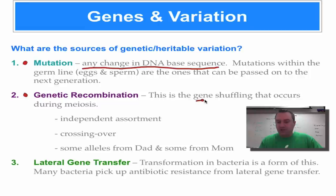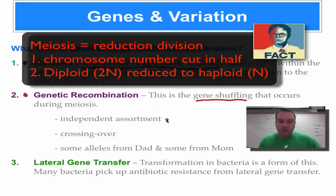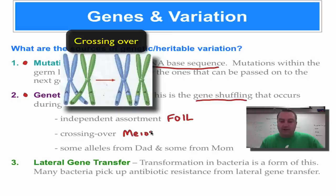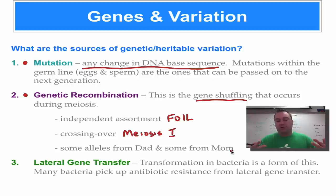Genetic recombination simply means gene shuffling — getting new combinations of genes. During sexual reproduction, meiosis creates independent assortment, meaning alleles segregate independently of each other. Crossing over occurs during meiosis I, specifically during prophase I, when parts of a chromosome switch places — think of it as cutting the deck in cards. And half of your genes come from dad and the other half from mom, so you are not a clone of either parent but a mixture of their genes.